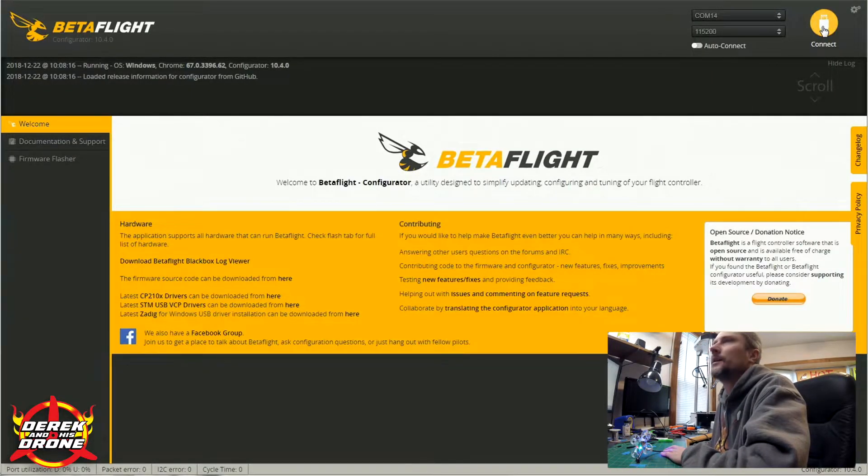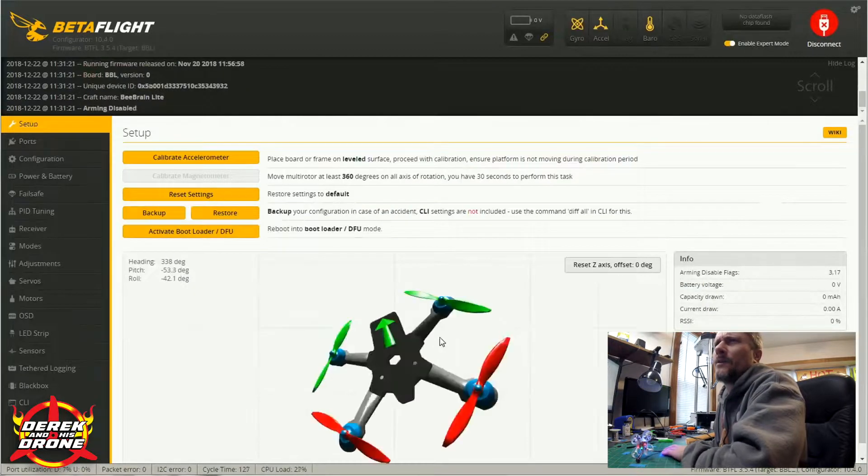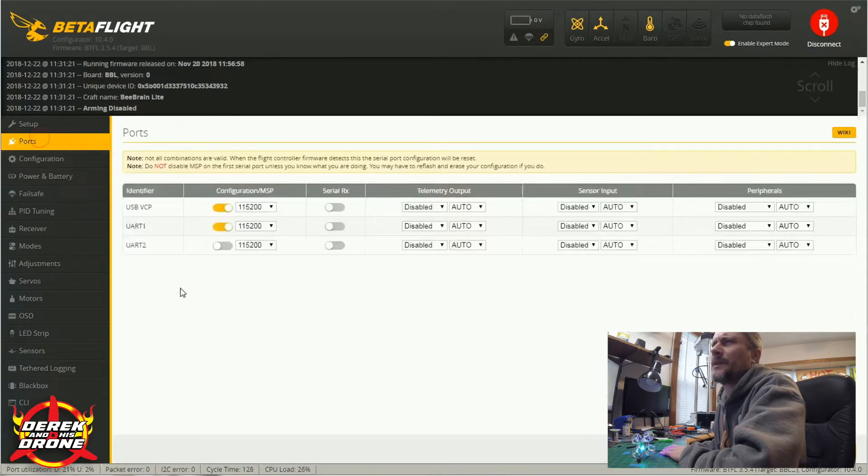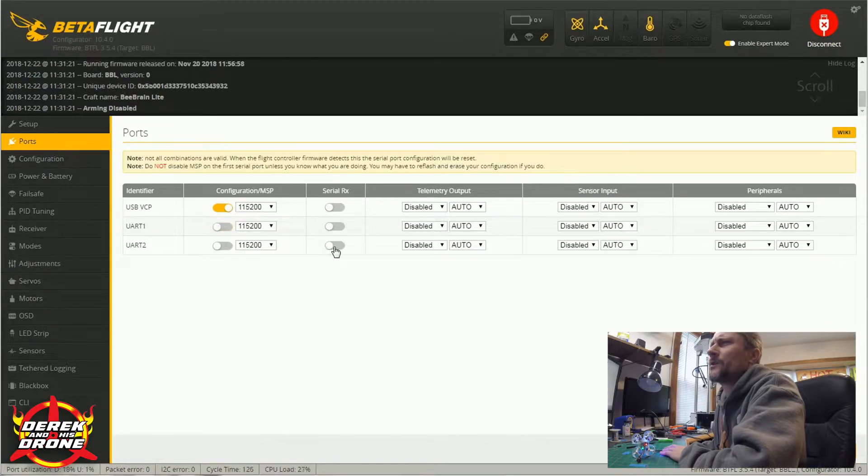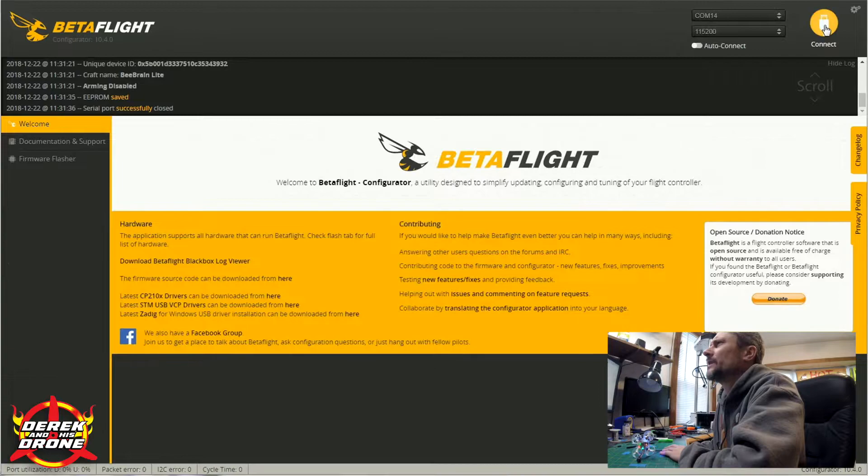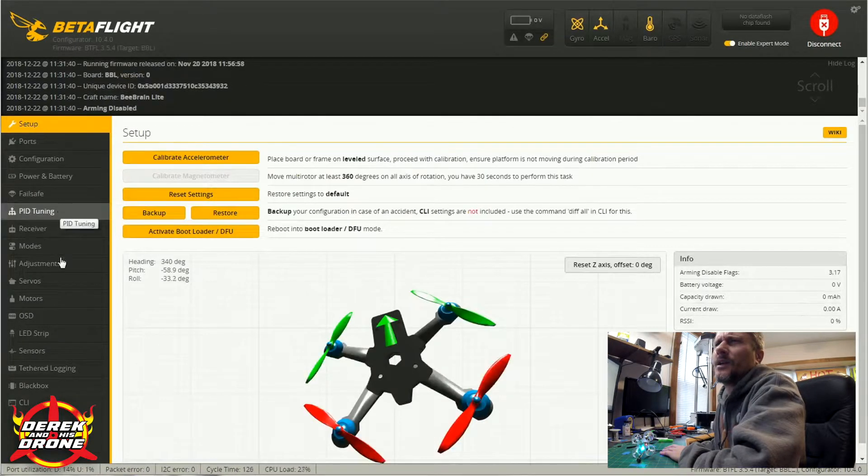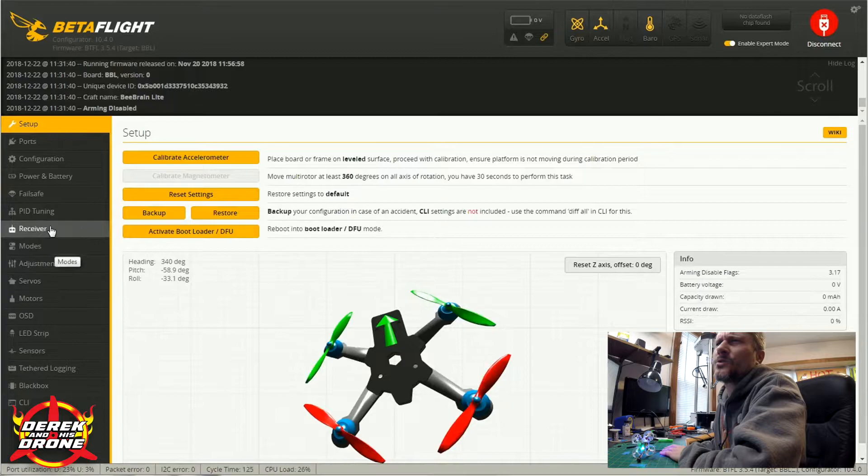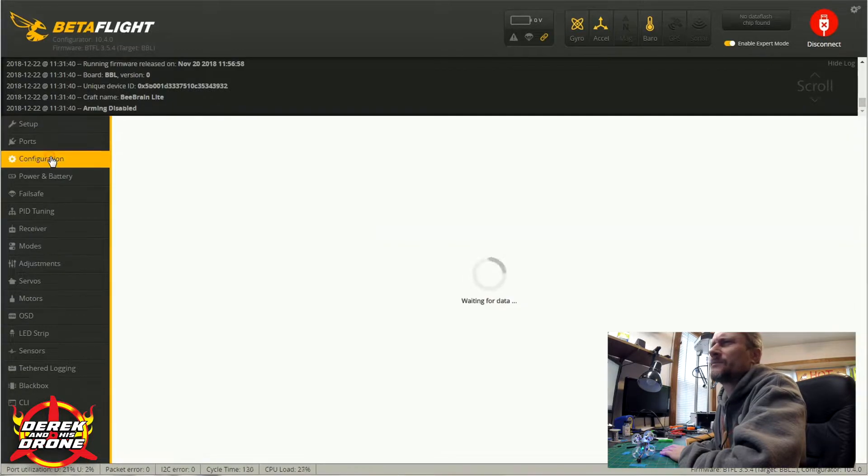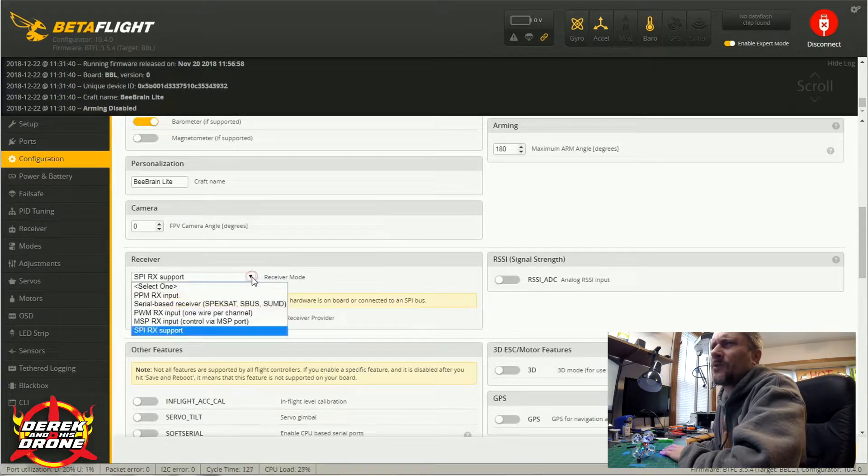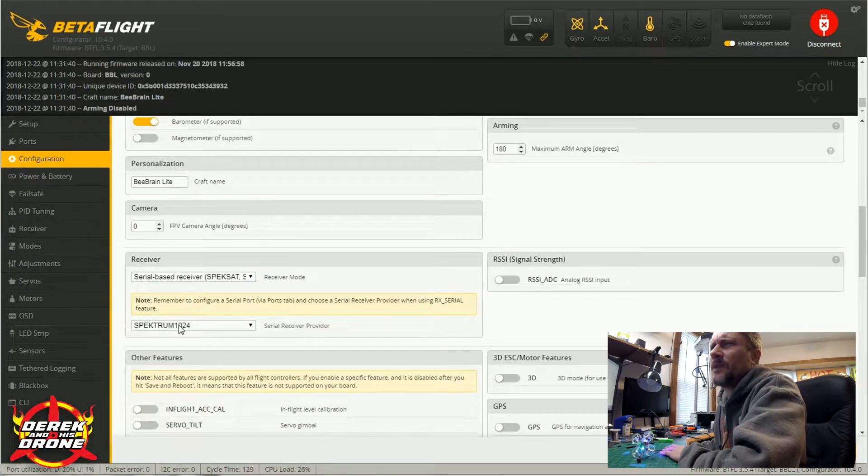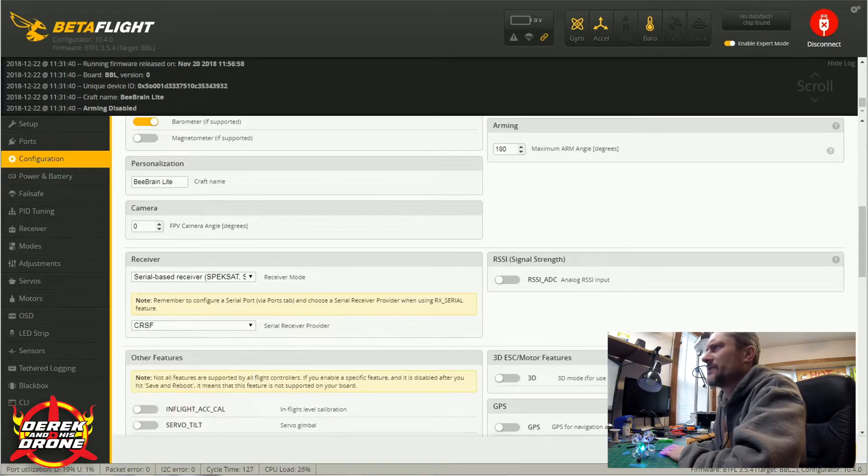Should get the old pop-up here, the COM port. I'm going to hit connect. Now that we're connected, we're going to go to our ports. We are going to shut off configuration MSP on UART1. And on UART2, we are going to enable SerialRx. Save and reboot. We're going to connect again. We are going to go to configuration. We're going to scroll down to receiver. We are going to say Serial-based receiver. And we are going to choose Crossfire. Save. That's it.